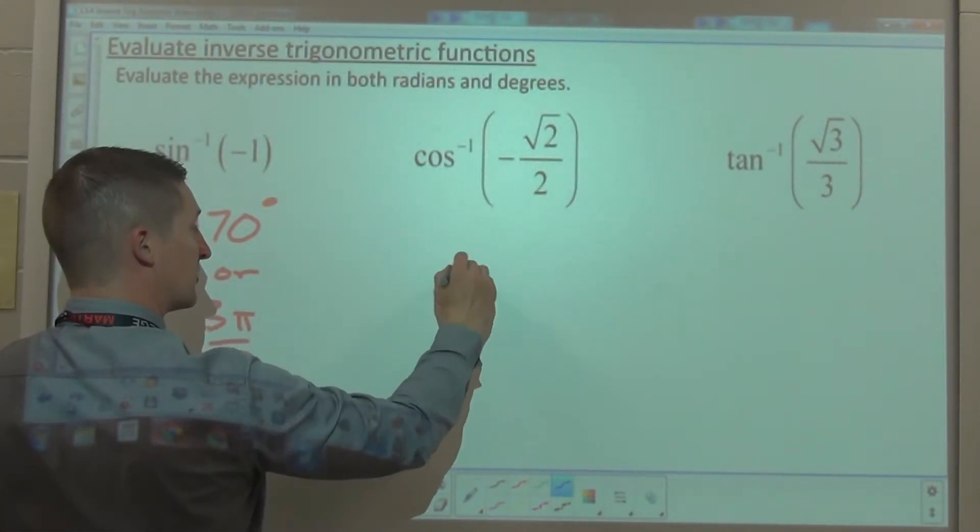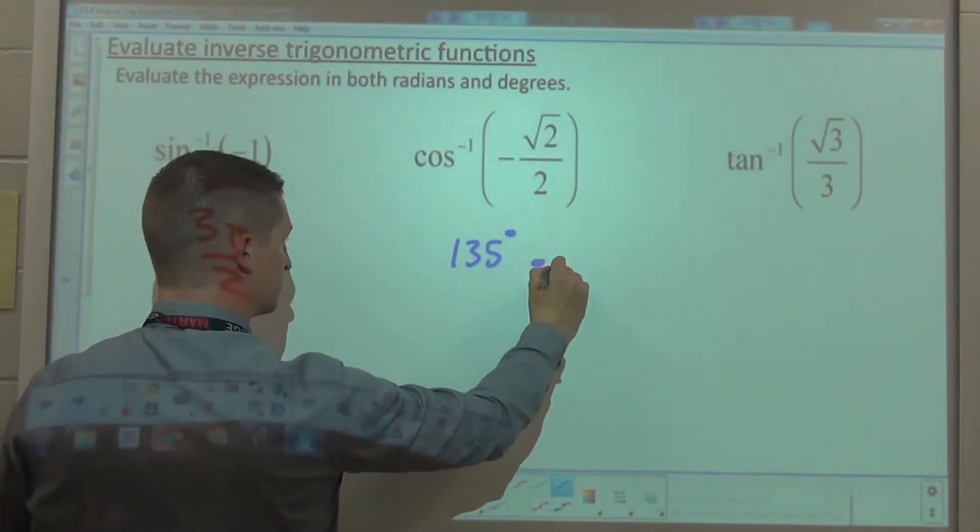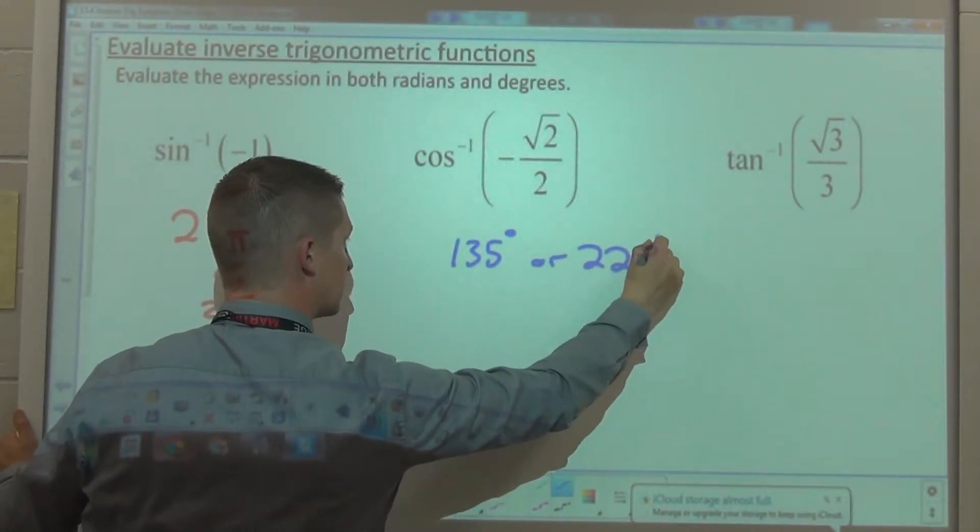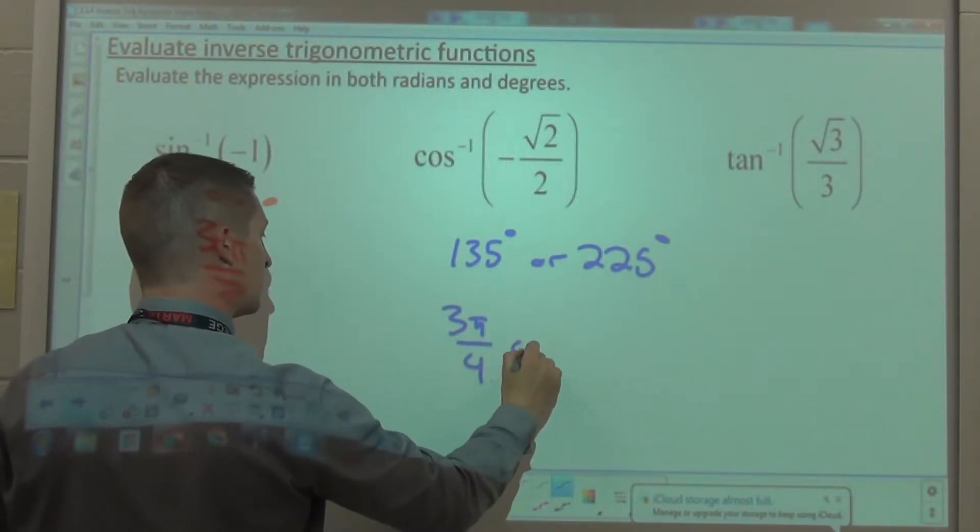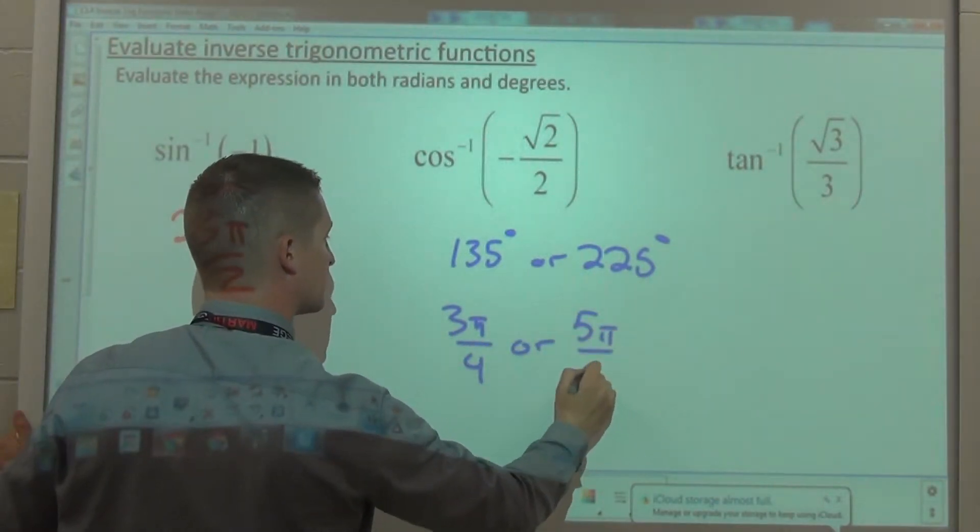Arc cosine of negative square root of 2 over 2, 135 or 225 degrees. In radians, that would be 3 fourths of pi, or 5 fourths of pi.